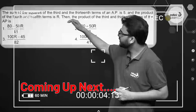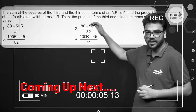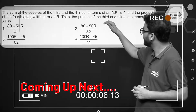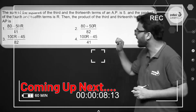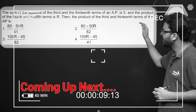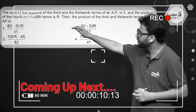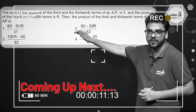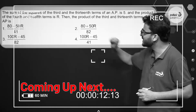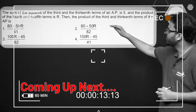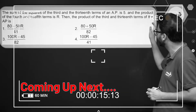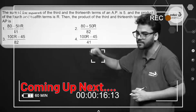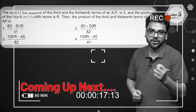It is given that the sum of the squares of the 3rd and the 13th terms of an AP is 5, and the product of the 4th and 12th terms is R. You have to find the product of the 3rd and 13th terms of that AP.